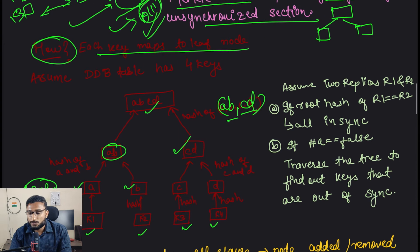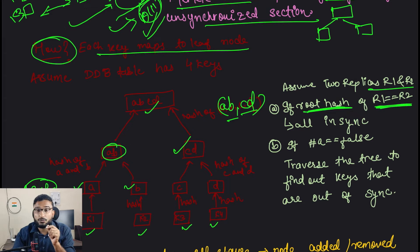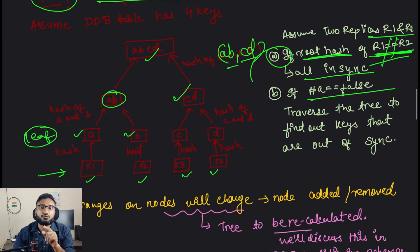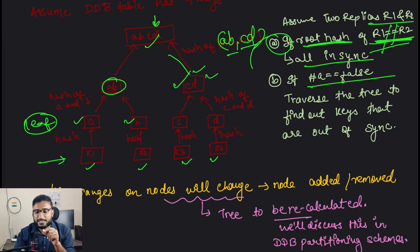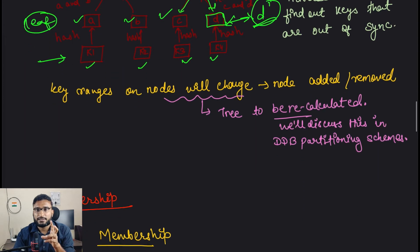When you have two replicas R1 and R2, you build Merkle trees for both and compare the root hashes. If the root of R1 equals the root of R2, everything is in sync. If they are not equal, you traverse the tree to specifically find where the inconsistency is. For example, if ABCD doesn't match, you go down to AB and CD - if CD matches but AB doesn't, you go further. If going down you find that leaf node D in R2 is D' (different), then you can sync only that specific key. This greatly reduces the time required.